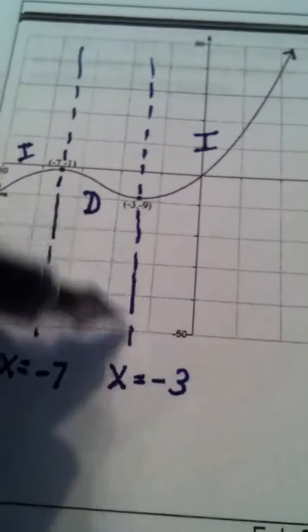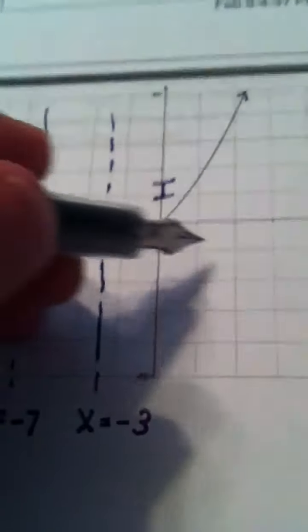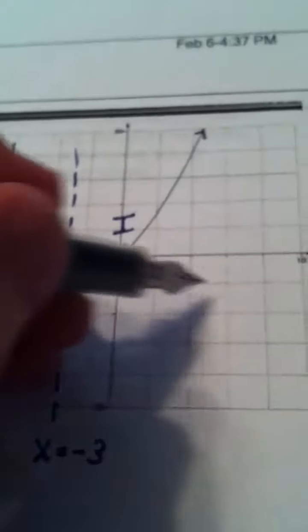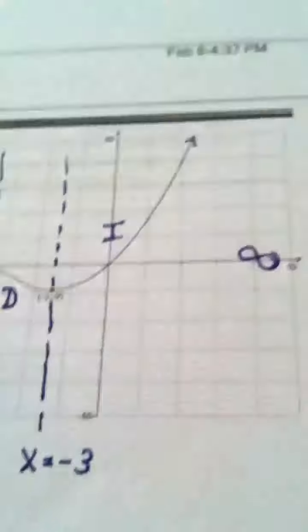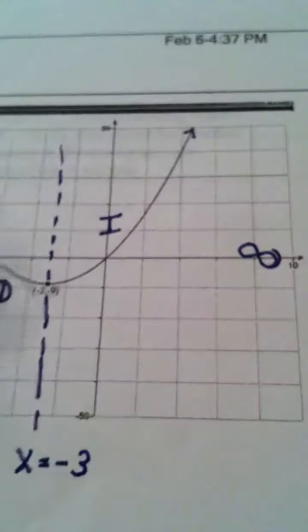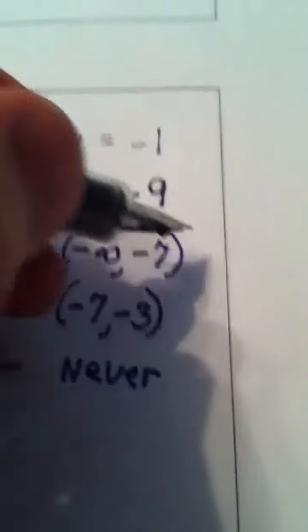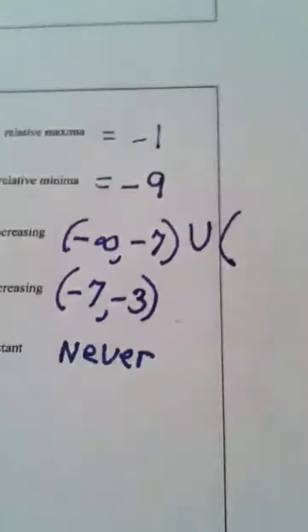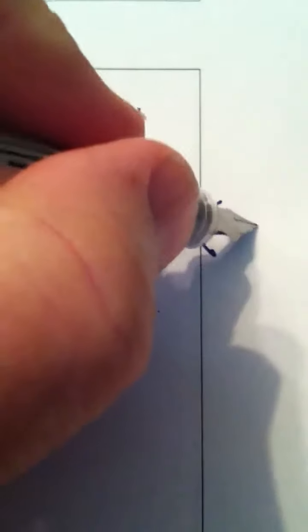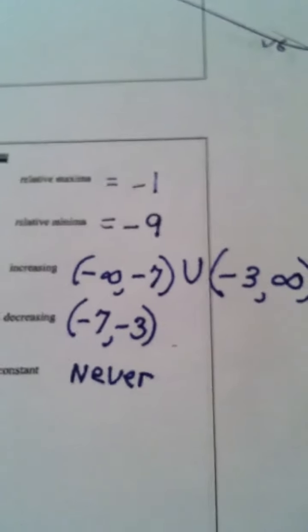And then, from this point on, okay, my x value is negative 3, and the graph is increasing. So that means as I walk out on the x-axis to infinity, my graph, you know, I'm still increasing. So where did it start? It started past negative 3 and went out to infinity. So we come up here, and we put union negative 3, comma, infinity. And those are our answers.